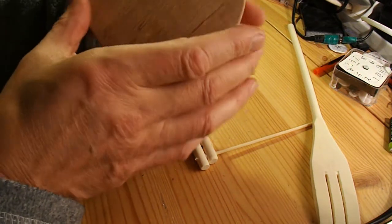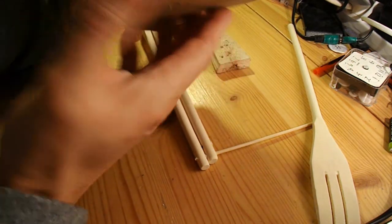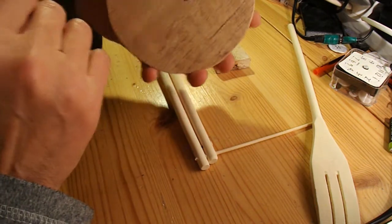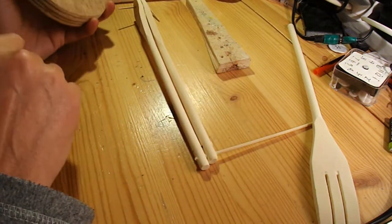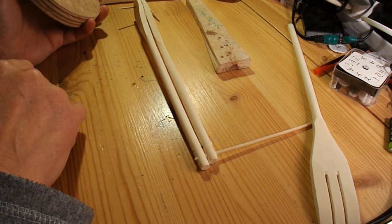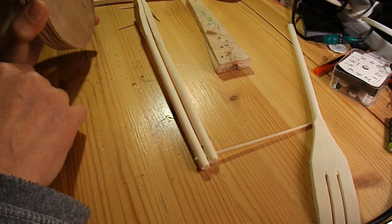They're not perfectly round, I'm not very good at cutting circles, but they should do us wheels. So I shall have some wooden wheels to go with my wooden kitchen utensils to make this car out of.